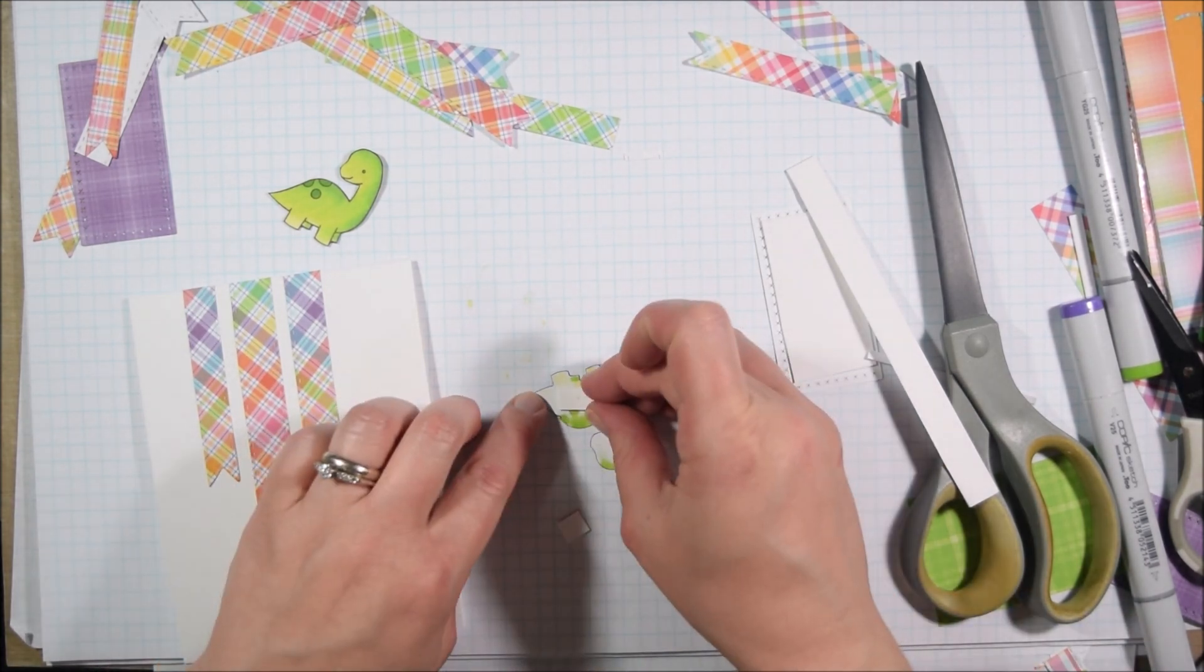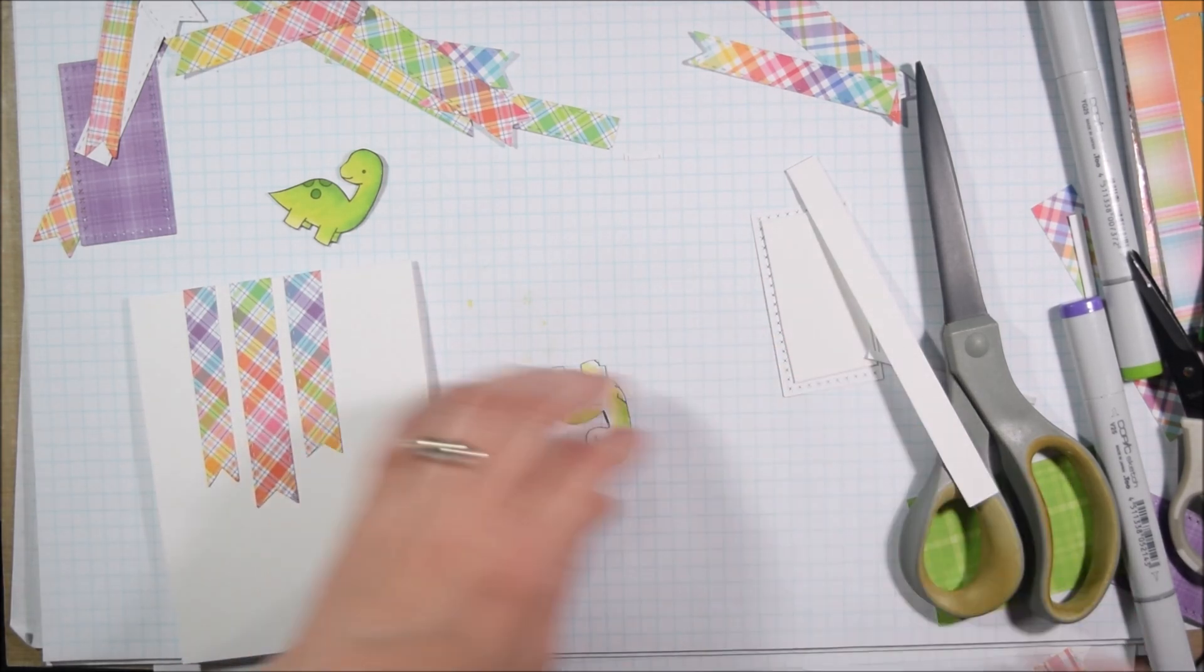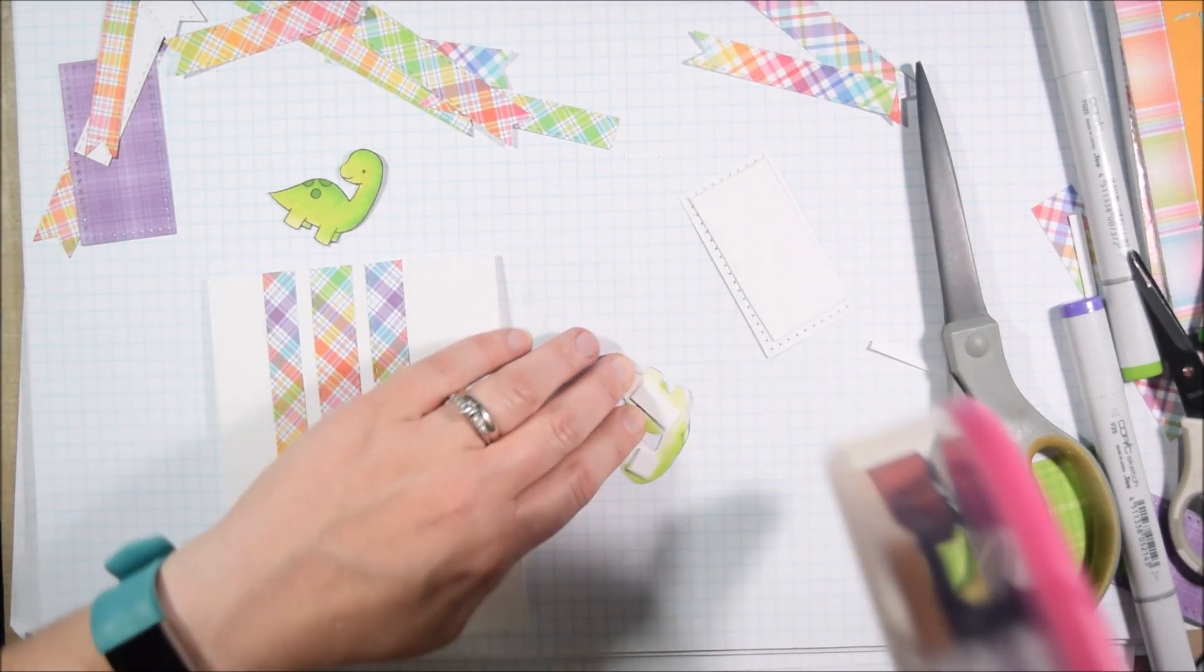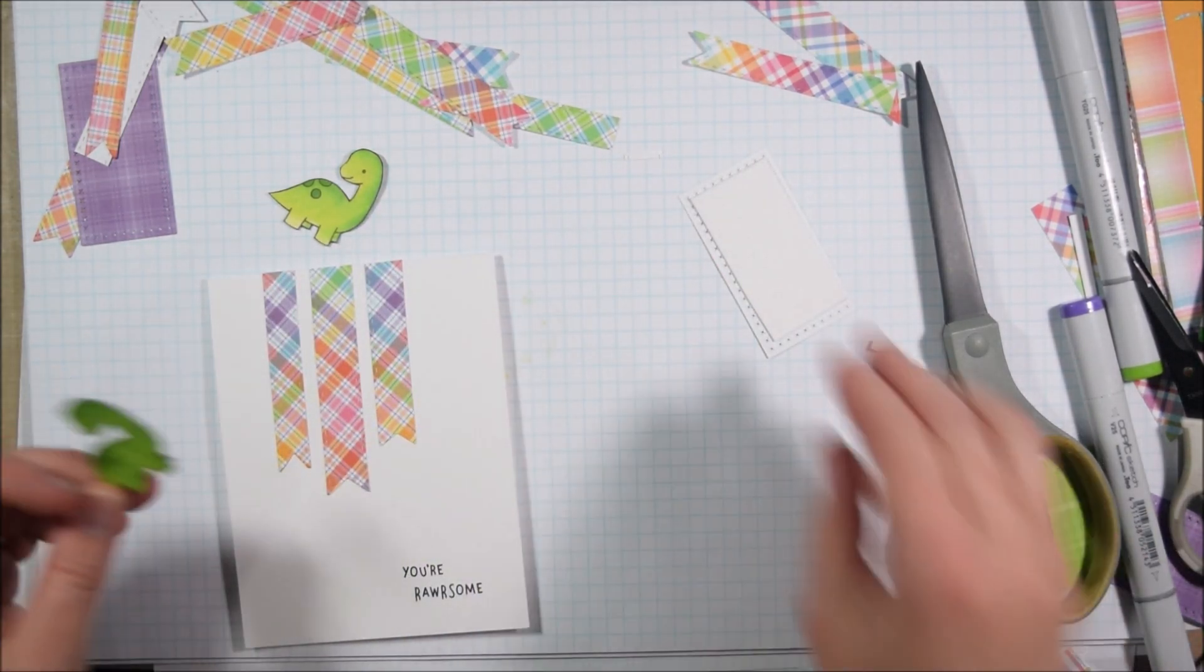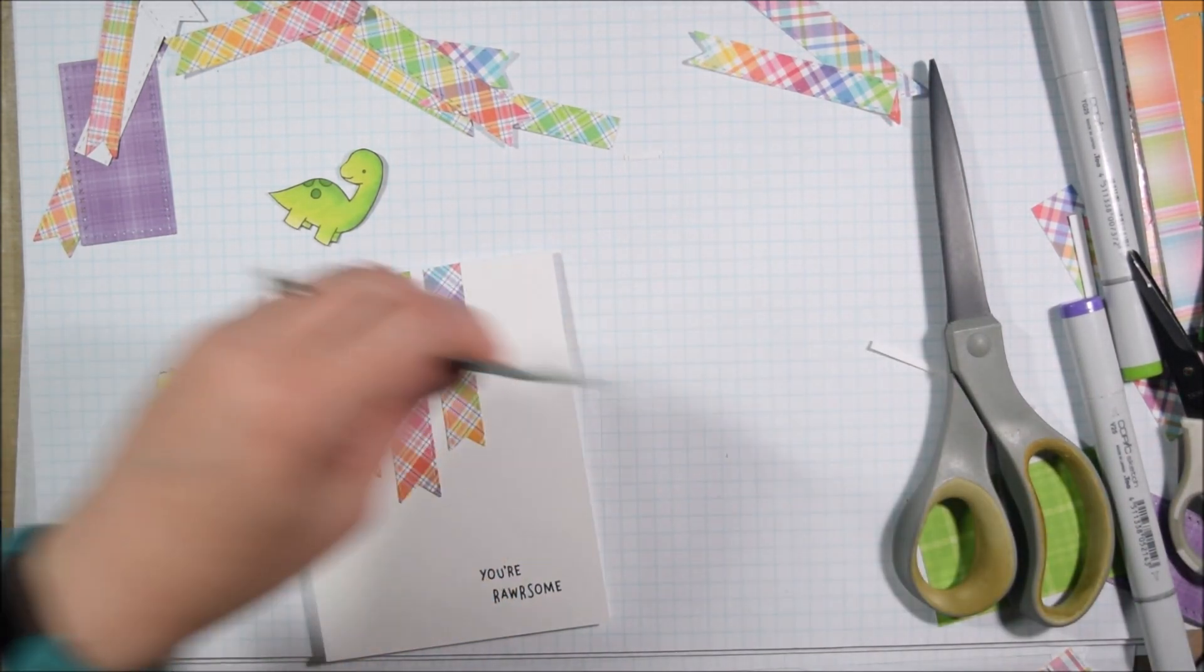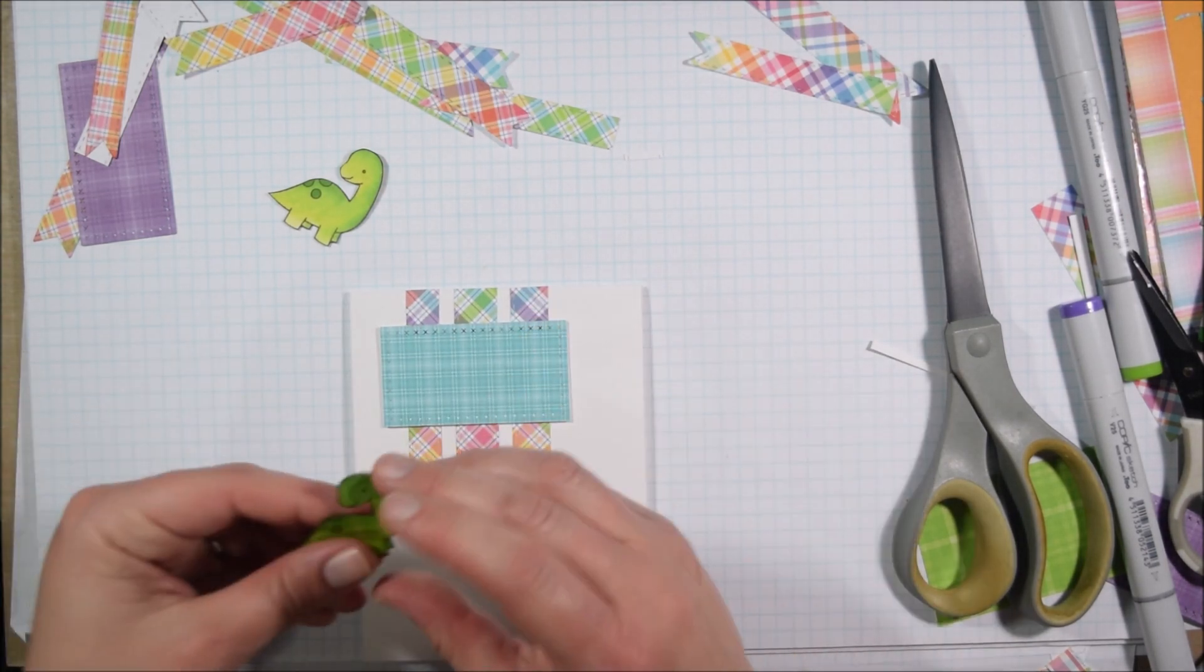So when this card is done being enjoyed, it can be tossed into the recycling bin, so that's kind of cool. But also it saves me money because I don't have to buy foam or dots or whatever. And in this case, the whole point of this card was to use up some scraps, so here I'm using up my white cardstock scraps.